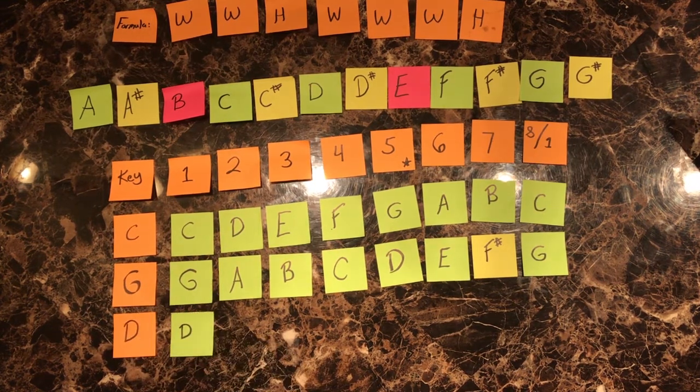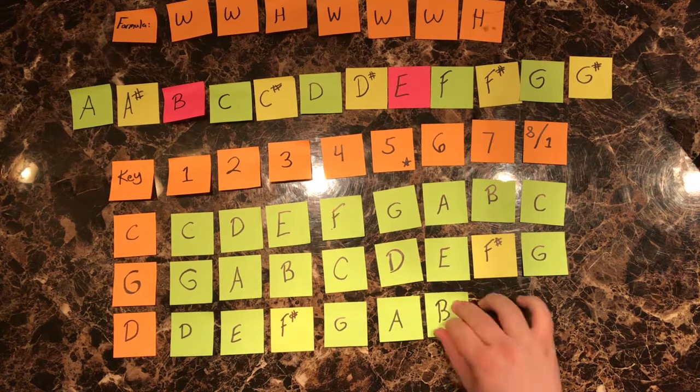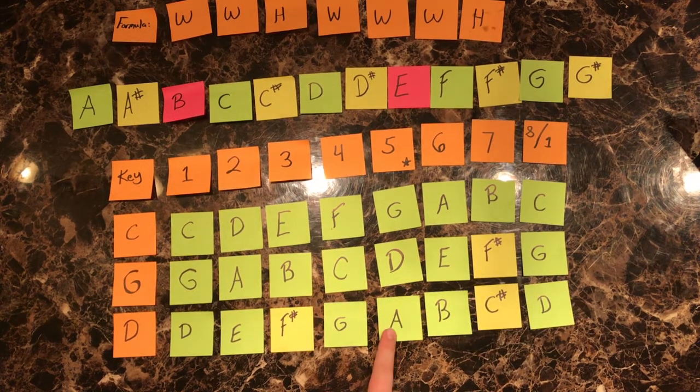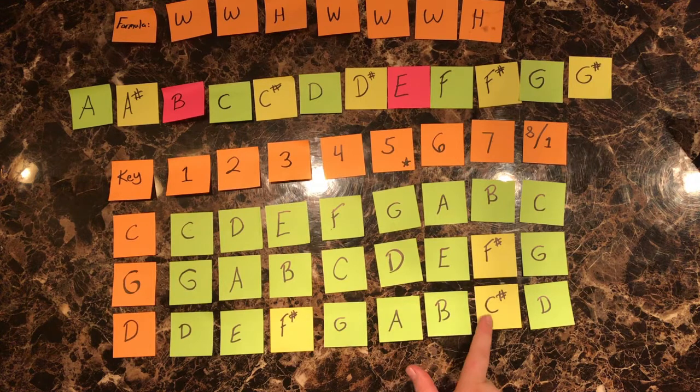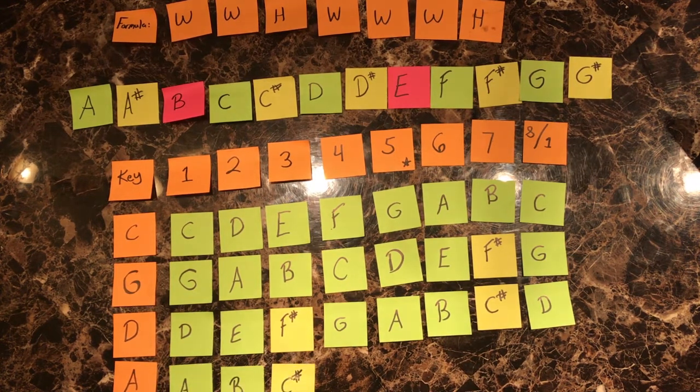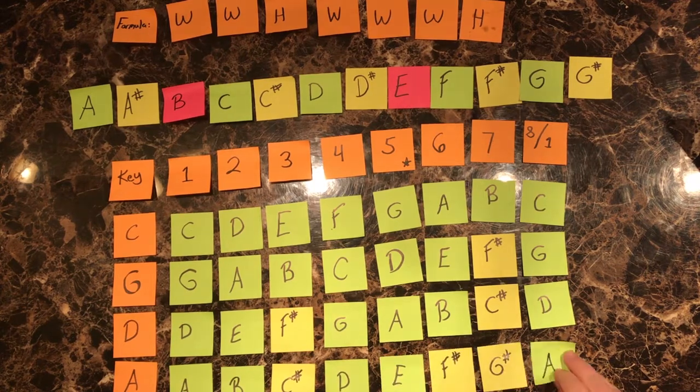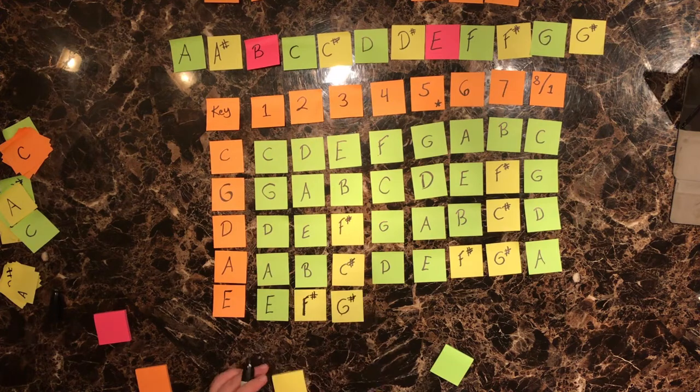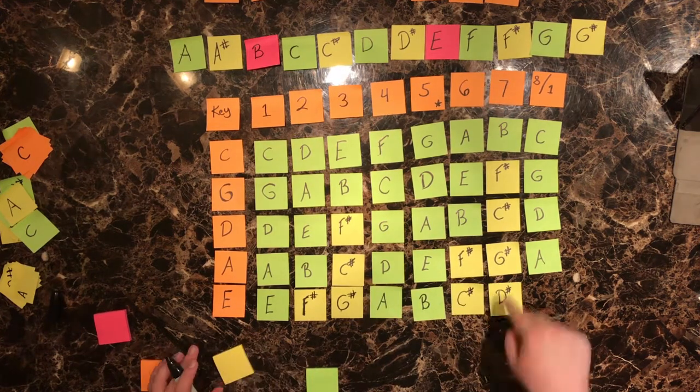Key of D: D, E, F sharp, G, A, B, C sharp, D. D's fifth is A. Moving forward, both F and C are now sharp. Key of A: A, B, C sharp, D, E, F sharp, G sharp, A. A's fifth is E. E, F sharp, G sharp, A, B, C sharp, D sharp, E.